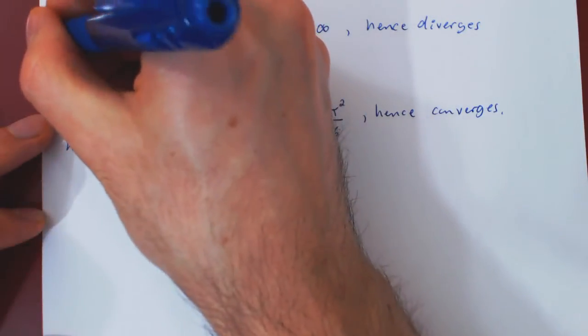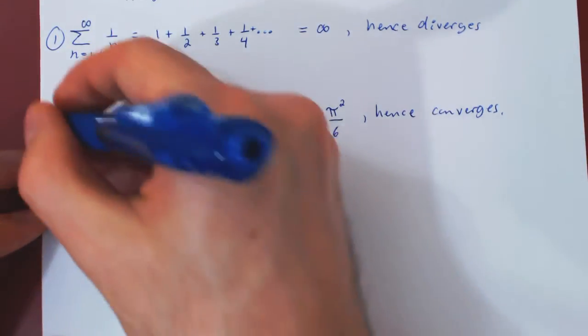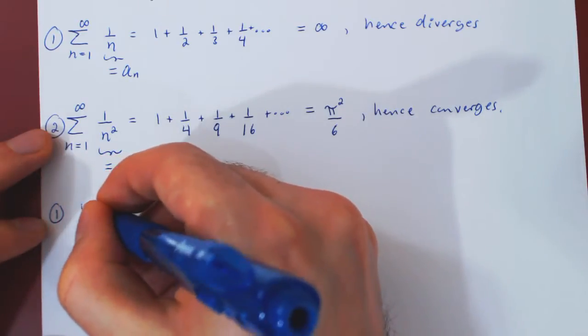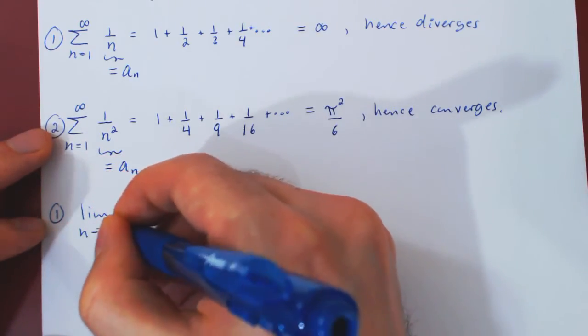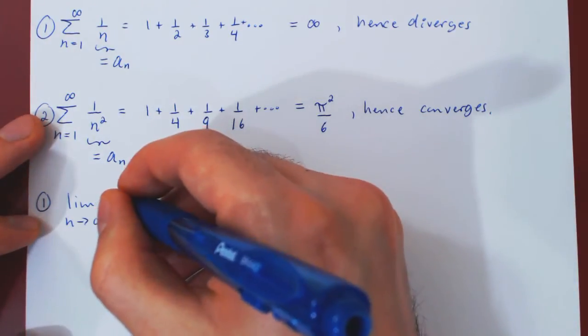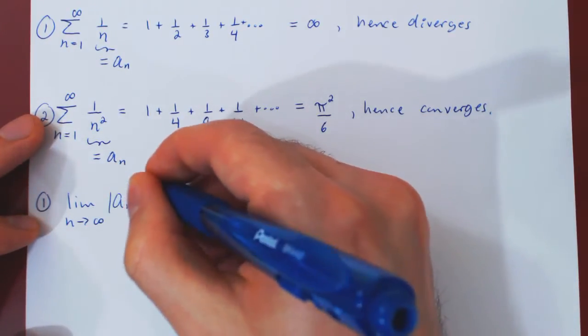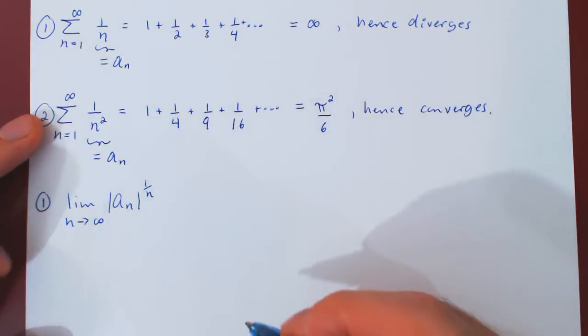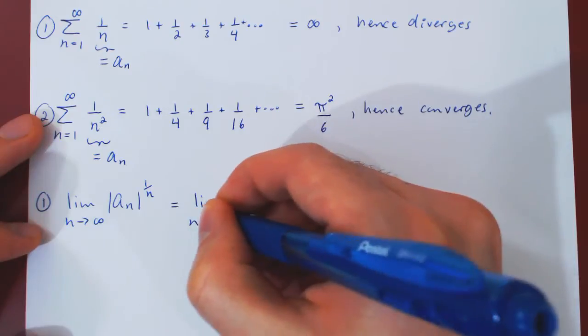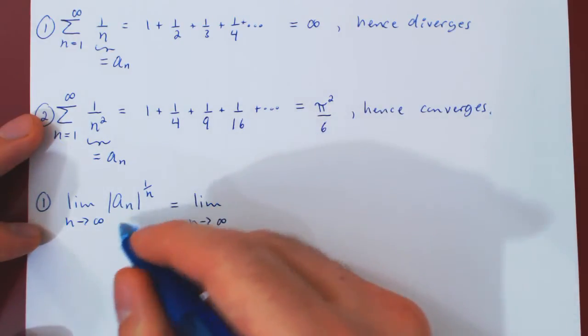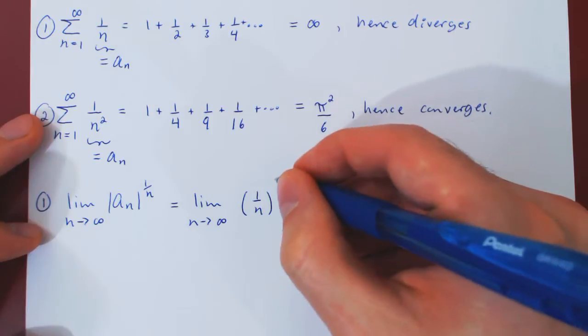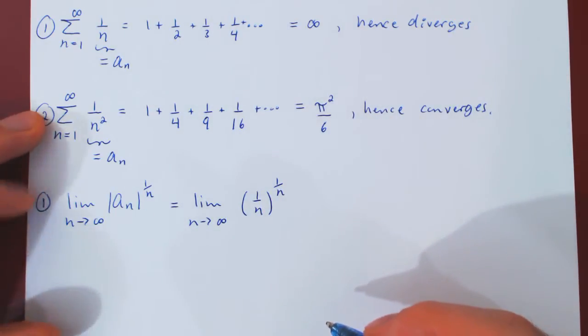So all we'll take here is the limit as n tends to infinity of the nth root of a_n. Let's look at our first case, case 1. So in case 1, the limit as n tends to infinity of |a_n| to the 1/nth root. We can now replace. So a_n is 1 over n. Again, as 1 over n is positive, we drop the absolute value to the 1 over nth power.